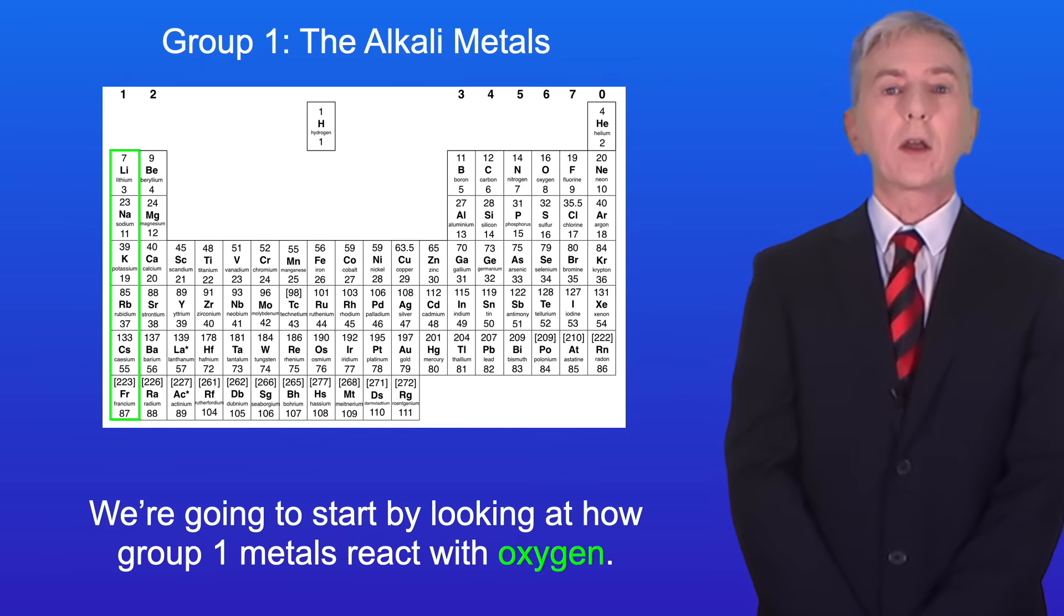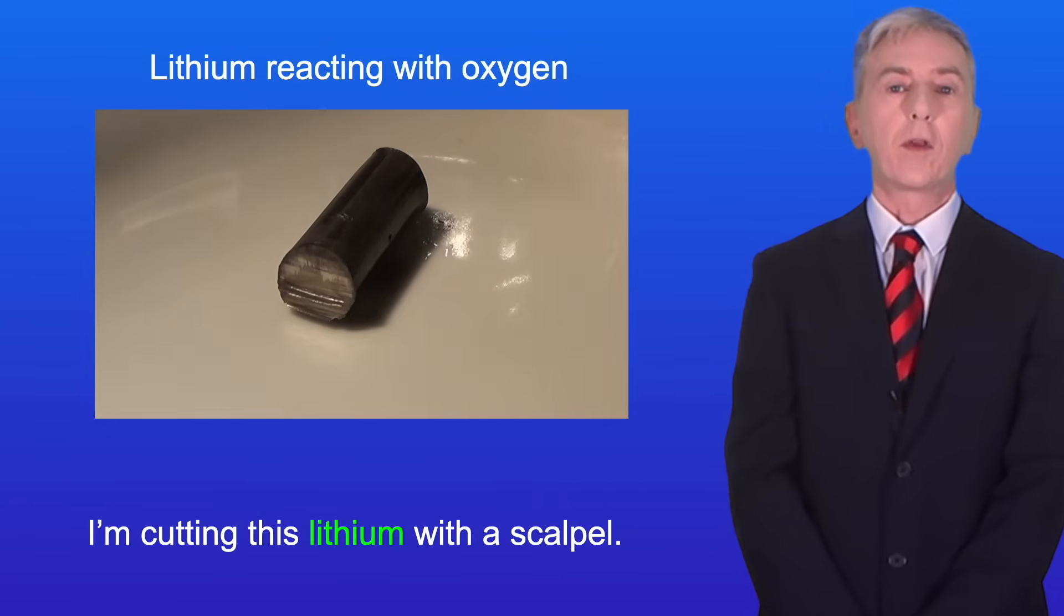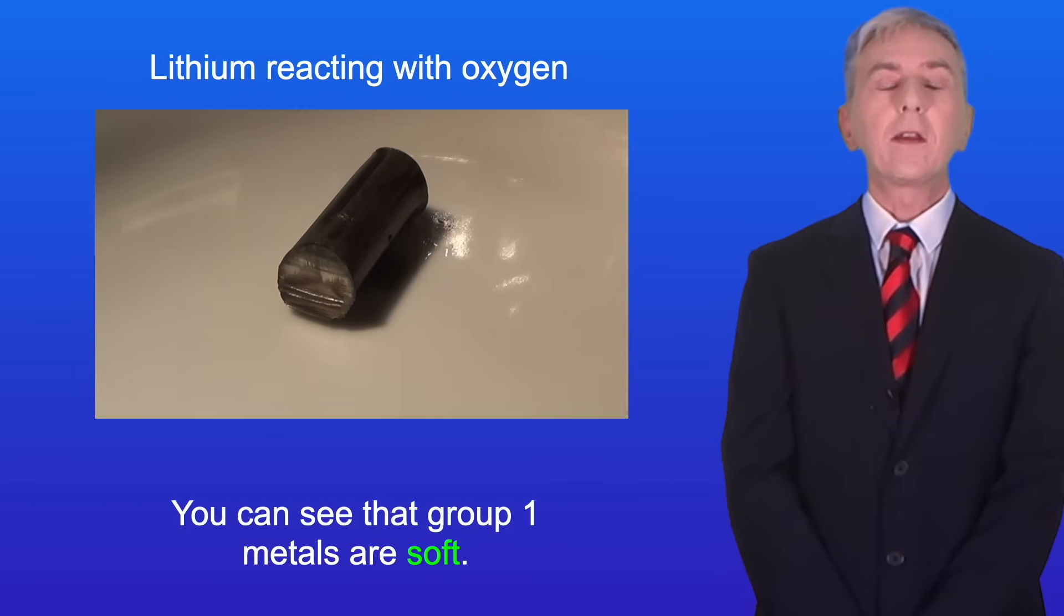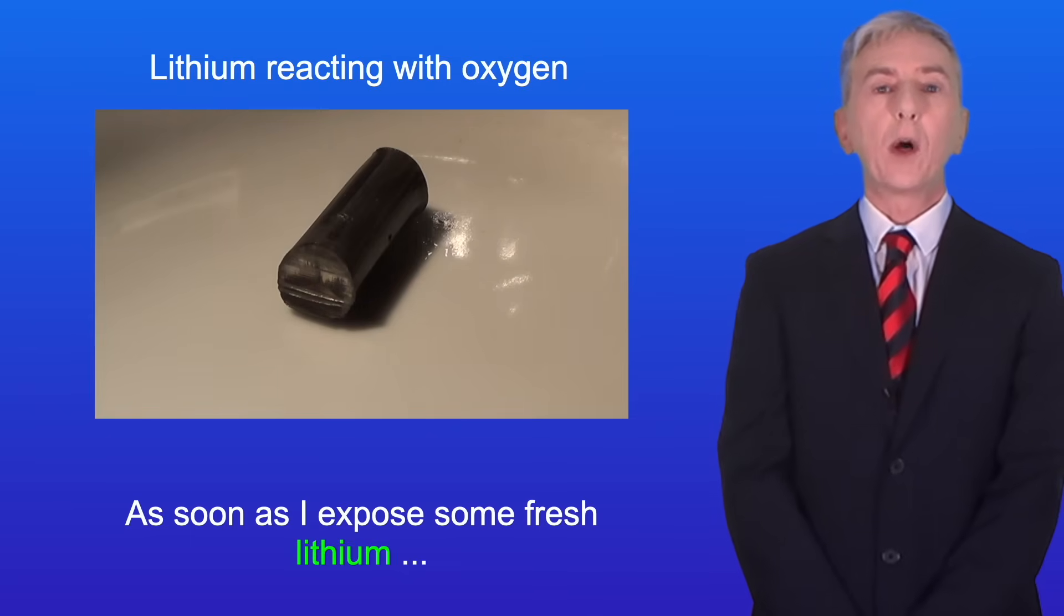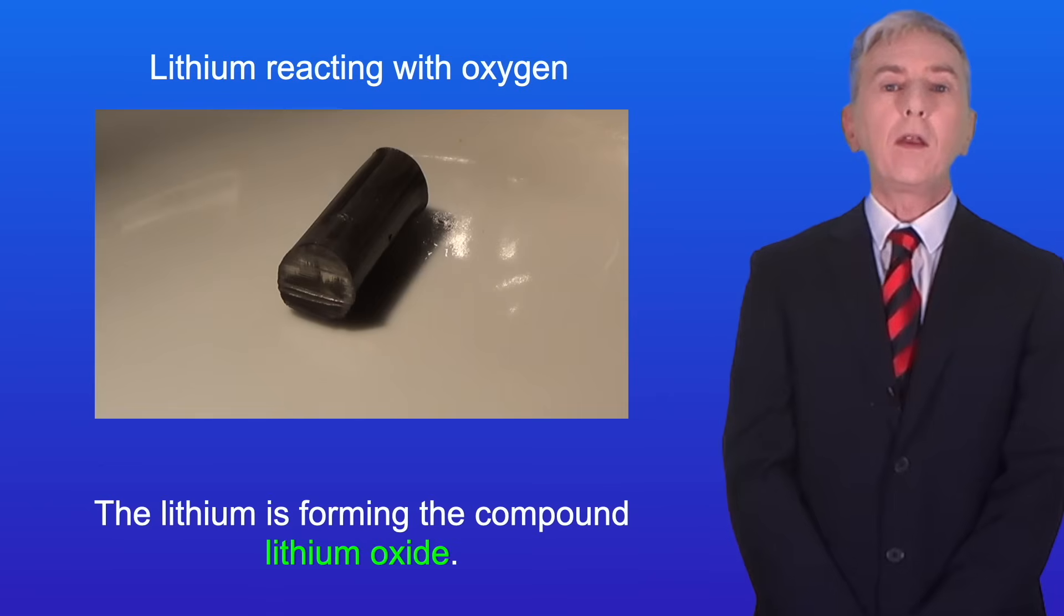We're going to start by looking at how group 1 metals react with oxygen. I'm showing you here the element lithium and I'm cutting this lithium with a scalpel. You can see that group 1 metals are soft. Now as soon as I expose some fresh lithium it reacts rapidly with oxygen in the air. The lithium is forming the compound lithium oxide.